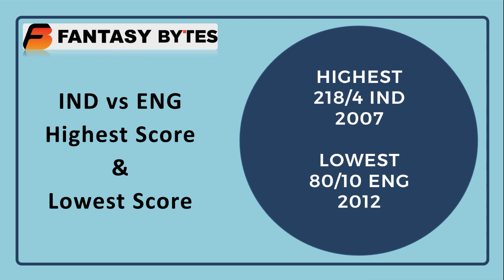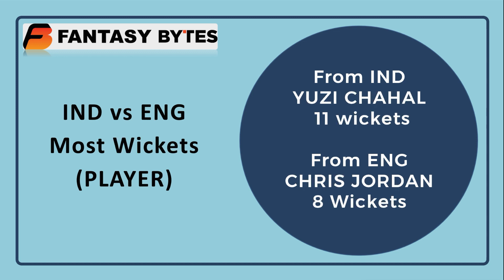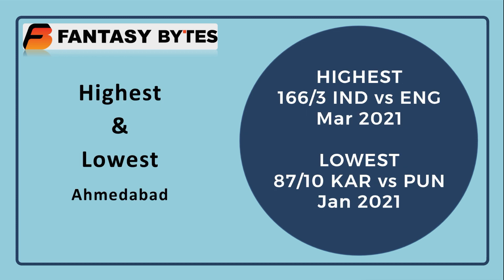The highest score between these teams is 218/4 by India in 2007, the match where Yuvraj Singh smashed 6 sixes. The lowest was England's 80 all-out in the 2012 World Cup. Top run scorer is Virat Kohli with 419 runs, and on the other side Ian Morgan with 342 runs. Top wicket taker is Yuzi Chahal with 11 wickets, and Chris Jordan with 8 wickets, though he may not play today.